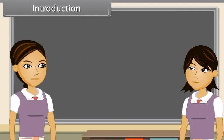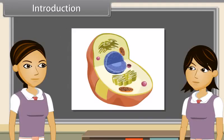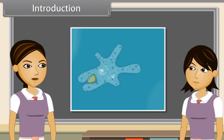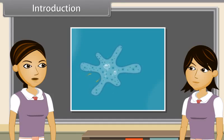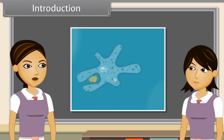We know that the cell is the structural and functional unit of life. Do you know what does it actually mean? It means a single cell can perform all basic functions of life — for example, movement, intake of food and respiratory gases, respiration, and excretion.